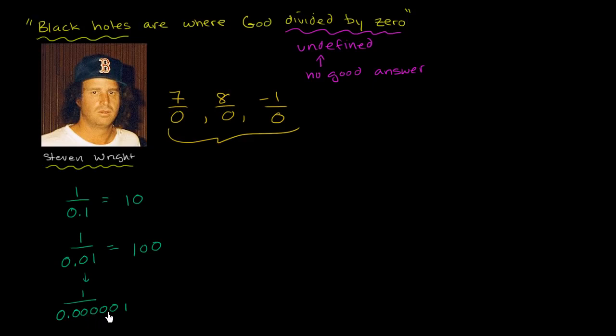a thousandth, ten-thousandth, hundred-thousandth. This is a millionth. 1 divided by a millionth, that's going to give us 1 million. So we see a pattern here. As we divide 1 by smaller and smaller positive numbers, we get a larger and larger value.